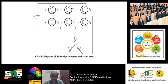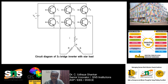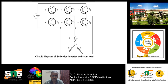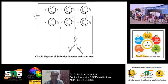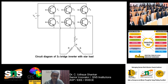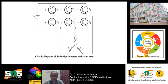The switches will be turned on and off in a specific switching sequence. If you switch in the wrong way you will not get a three-phase output. There are six switches named T1, T2, T3, T4, T5, and T6. You have to switch them in the correct sequence: first T1, then T2, then T3, then T4, then T5, then T6. If you switch in the wrong sequence you will never get a three-phase output waveform. The switching sequence plays a very vital role.